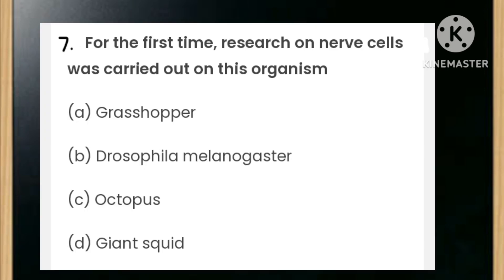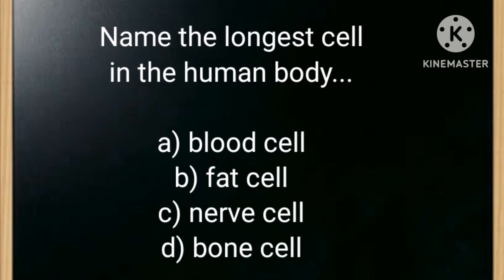For the first time, research on nerve cells was carried out on which organism: grasshopper, Drosophila melanogaster, octopus, or giant squid? The answer is giant squid. Name the longest cell in the human body — options are blood cell, fat cell, nerve cell, or bone cell. The answer is nerve cell.